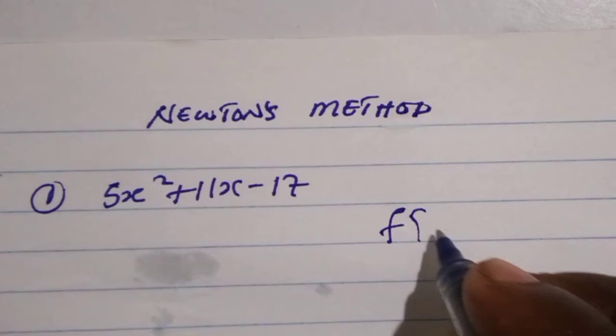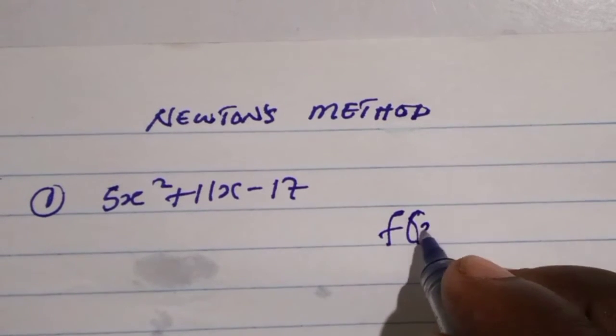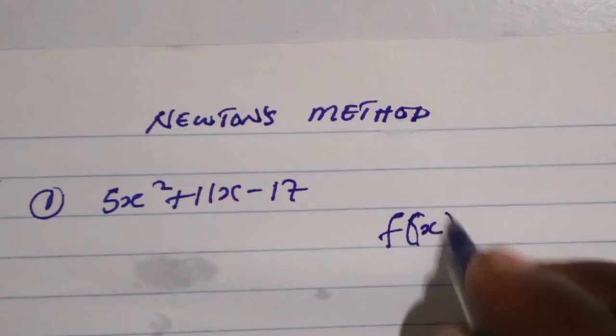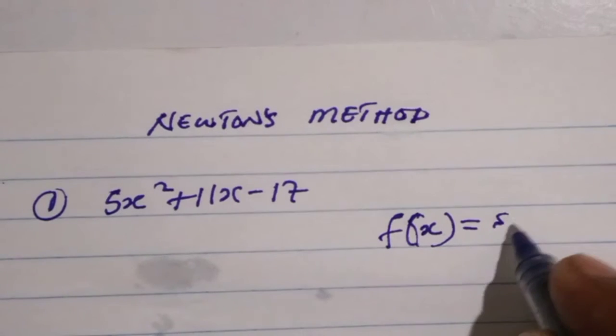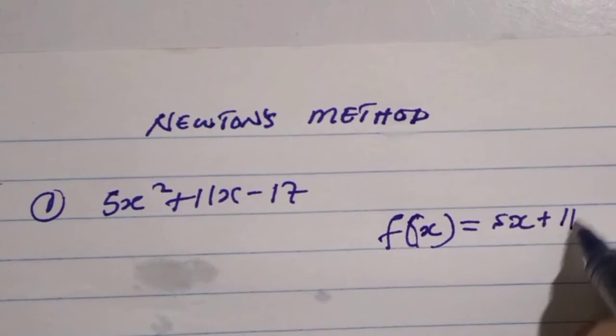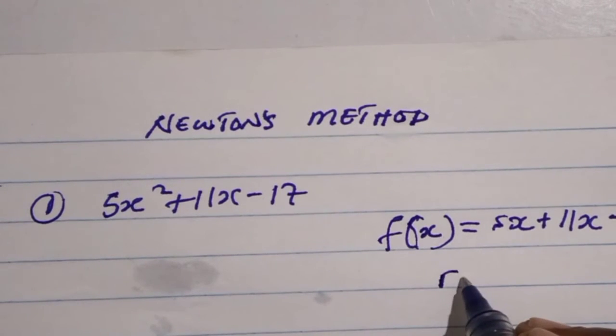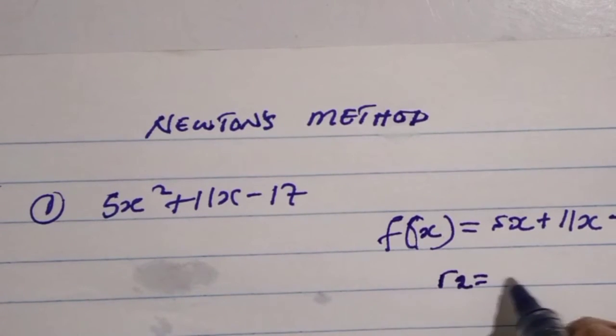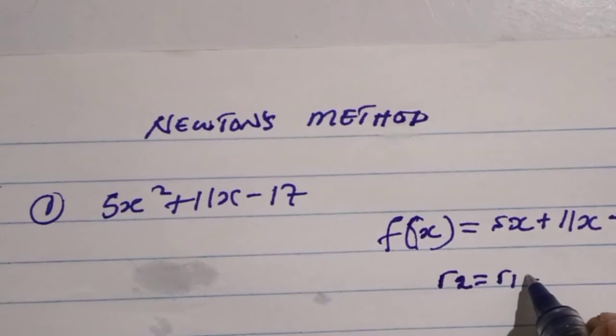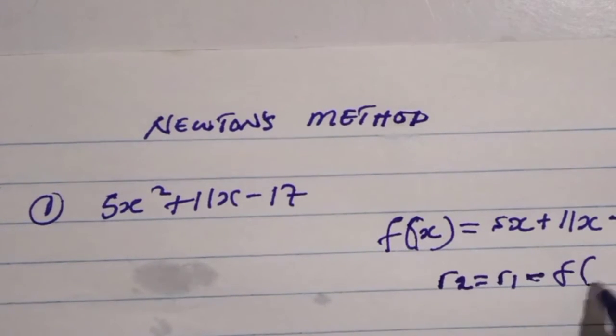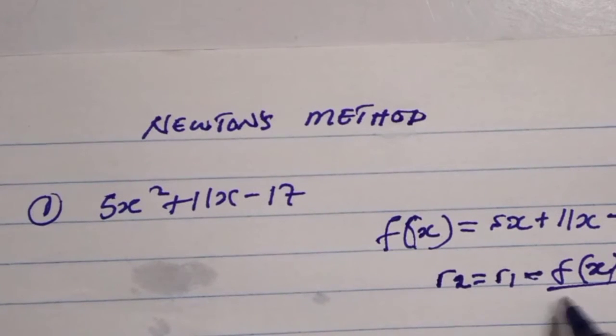Newton's Method has this formula: f(x) = 5x² + 11x - 17. The formula to use is r2 equals r1 minus the function over the first derivative - the function over if you differentiate that function which you have been given.